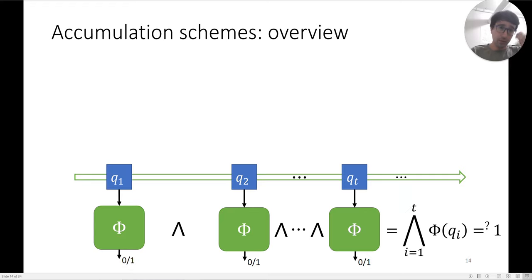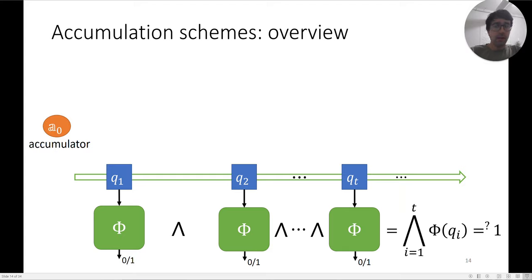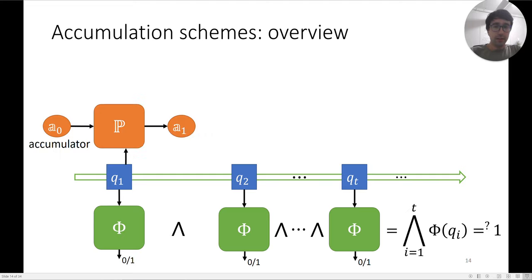One way to do this is to apply φ to each query as it comes in and remember the running conjunction. But if φ is expensive this may take a long time, so an accumulation scheme enlists an untrusted prover to help.